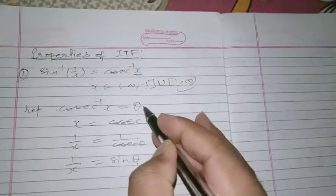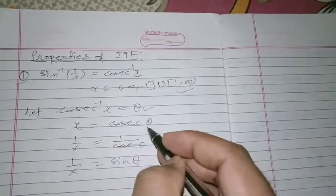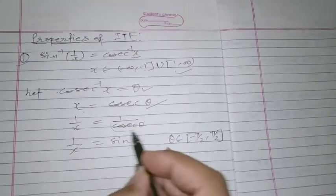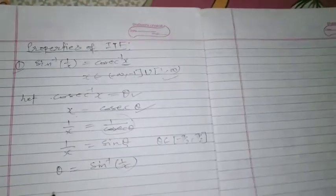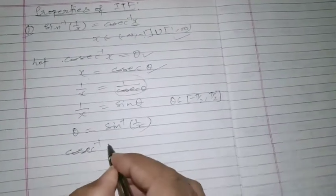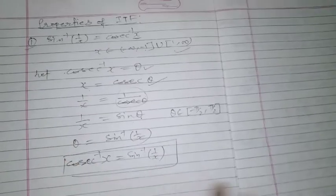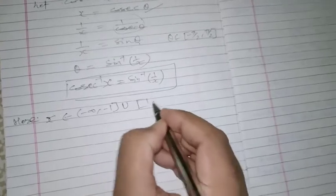Now let's see how to prove: cosec⁻¹(1/x) = cos⁻¹(x). We can write here: let x = cos θ, so θ = cos⁻¹(x). Now take the reciprocal: 1/x = 1/cos θ = sec θ. So here θ = sec⁻¹(1/x), and θ is also cos⁻¹(x), therefore cos⁻¹(x) = sec⁻¹(1/x).